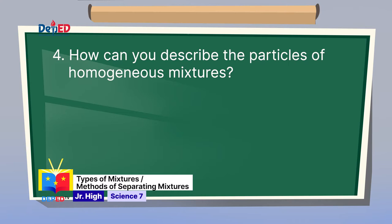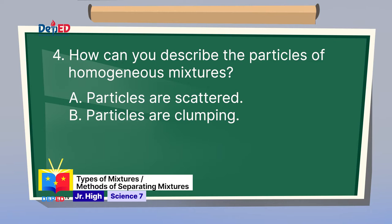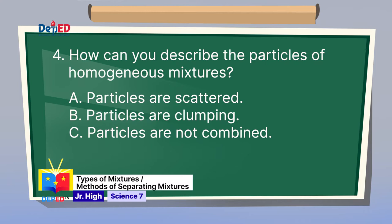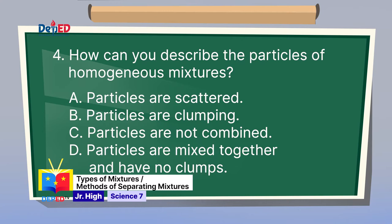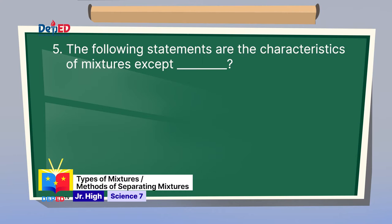Number 4: How can you describe the particles of homogeneous mixtures? A. Particles are scattered. B. Particles are clumping. C. Particles are not combined. D. Particles are mixed together and have no clumps. Letter D — particles are mixed together and have no clumps — describes a homogeneous mixture. The correct answer is letter D.